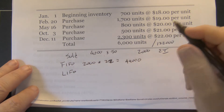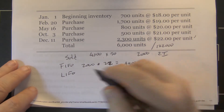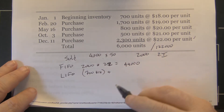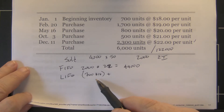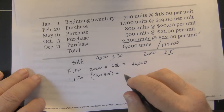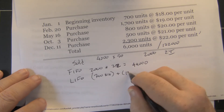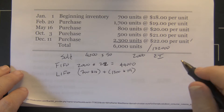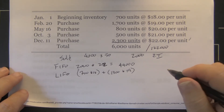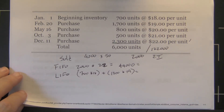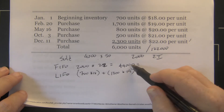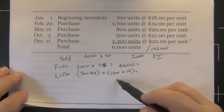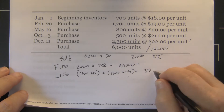Under LIFO we have 700 units at $18, plus another 1,300 units at $19. Remember, this is ending inventory — we're calculating ending inventory, not what we can't see. So under LIFO the ending inventory comes to $37,300.